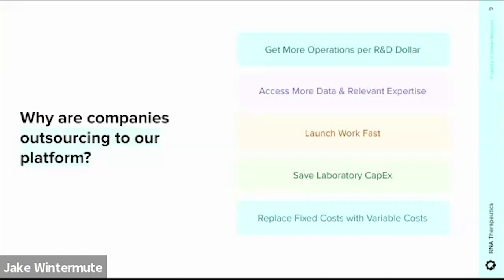First: more data per dollar. Ginkgo's Foundry is built at scale, which unlocks economies of scale — we have the automation platform to do more experiments and access more data. Second: launch work fast. Even if you wanted to build your own R&D platform, building from scratch takes months. With Ginkgo you get automation ready to go on day one. Third: save capex. You don't have to invest millions of dollars in specialized infrastructure that you may or may not need in a couple of years.